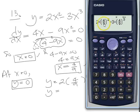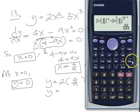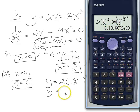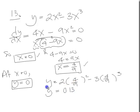So it's 2 times 4 ninths squared, minus 3 times 4 ninths cubed. Equals, equals that. 0.13, yeah? So y equals 0.13.